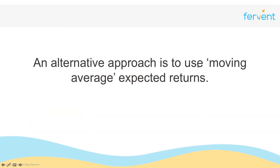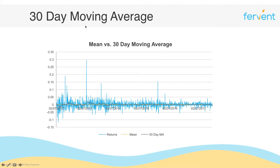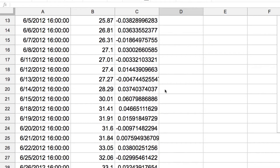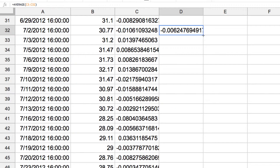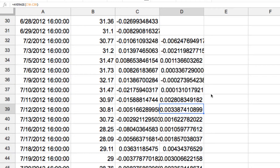An alternative approach is to use what's called moving average expected returns, which technical analysts seem to like quite a lot. Honestly, I don't understand why — for the record, I think this is a total and complete waste of time, and if you're serious about investing I certainly wouldn't rely on moving averages to make your decisions. But for completeness, a 30-day moving average is just the average over 30 days calculated on a rolling basis every 30 trading days.